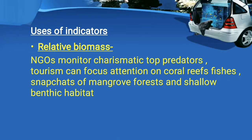The first indicator type is Relative Biomass. NGOs or National Government Organizations will monitor charismatic top predators. Tourism can focus attention on coral reef fishes and snapshots of mangrove forests and shallow benthic habitats. Top predators and tourism attention on coral reef fishes, as well as all benthic habitat indicators, fall under the Relative Biomass category.